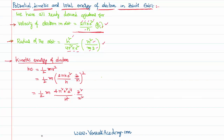Simplifying further, the 2 in the denominator and the 4 give us a factor of 2, so the kinetic energy equation becomes 2π²k²e⁴m/h² × z²/n². Therefore, we can say the kinetic energy of an electron is directly proportional to z²/n².